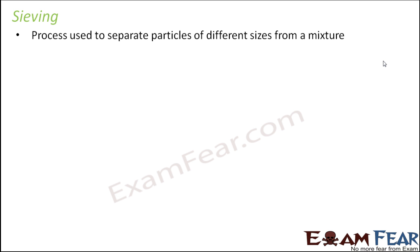Now let's talk about the fourth process, which is sieving. So what is sieving? When we talk about sieving, it is like separating particles of different sizes from a mixture. It doesn't matter whether a particle is heavy or light, but if the size of the particle is considerably different, in that case we can make use of sieving.